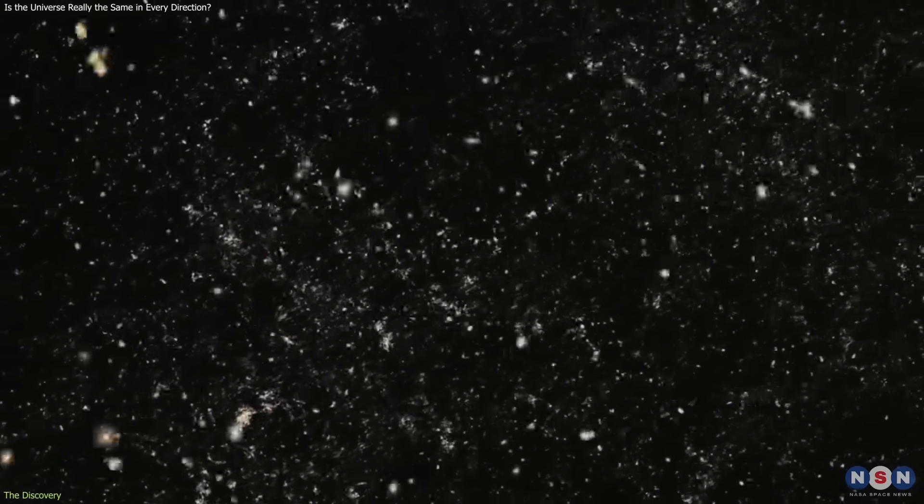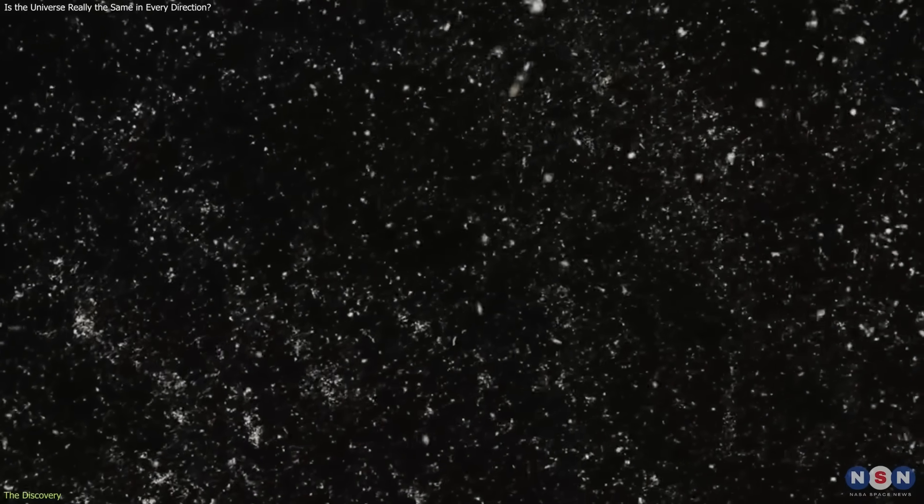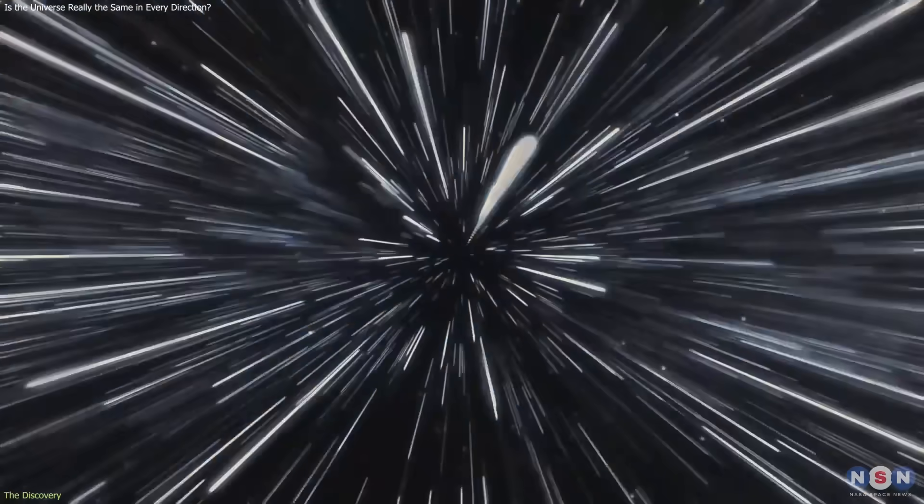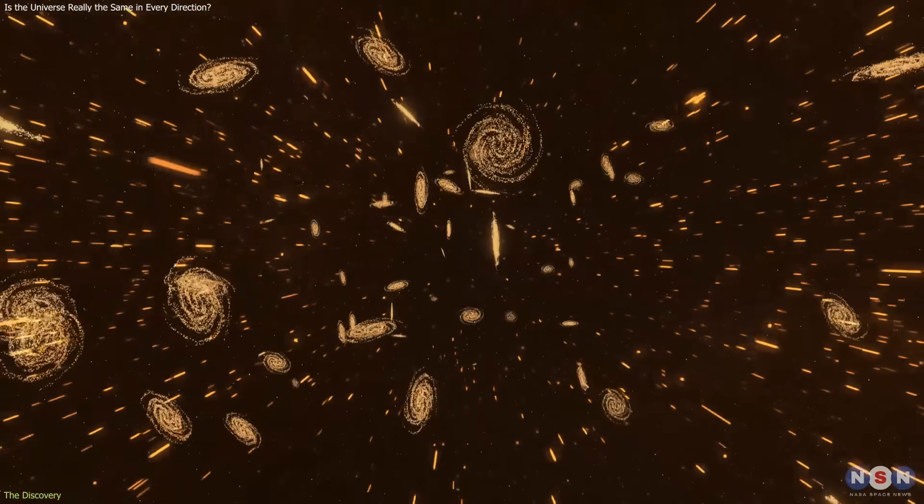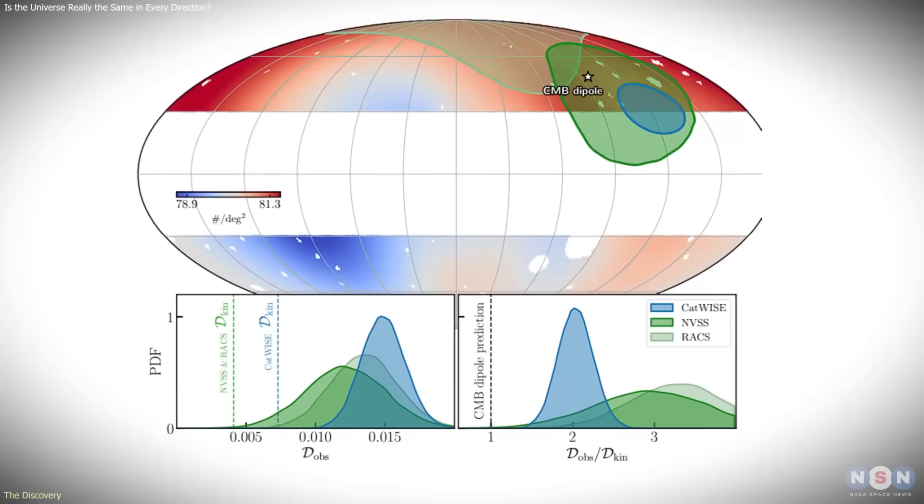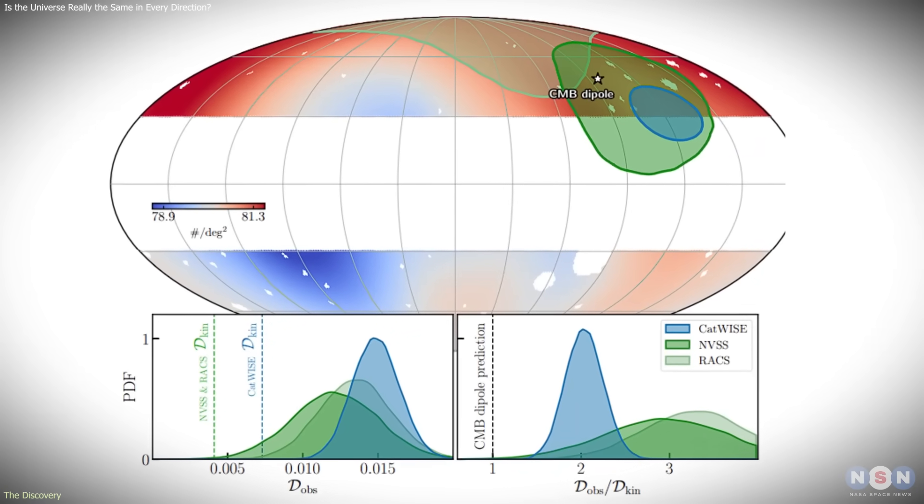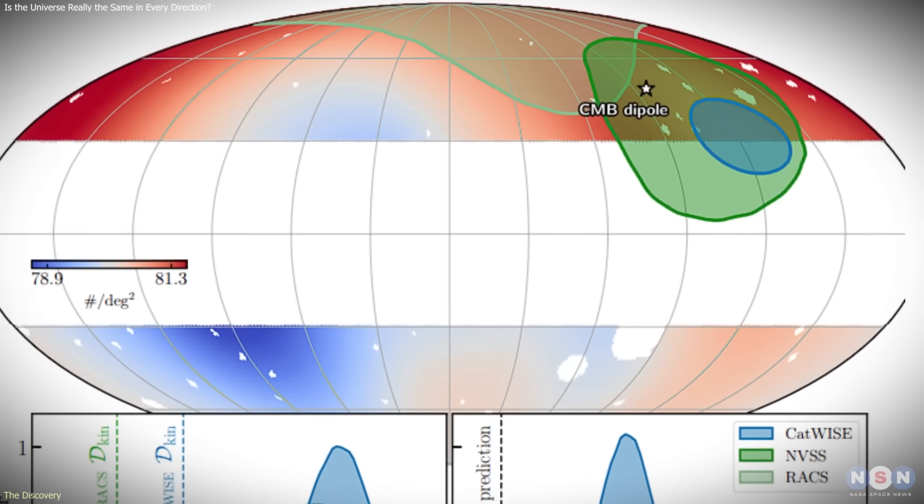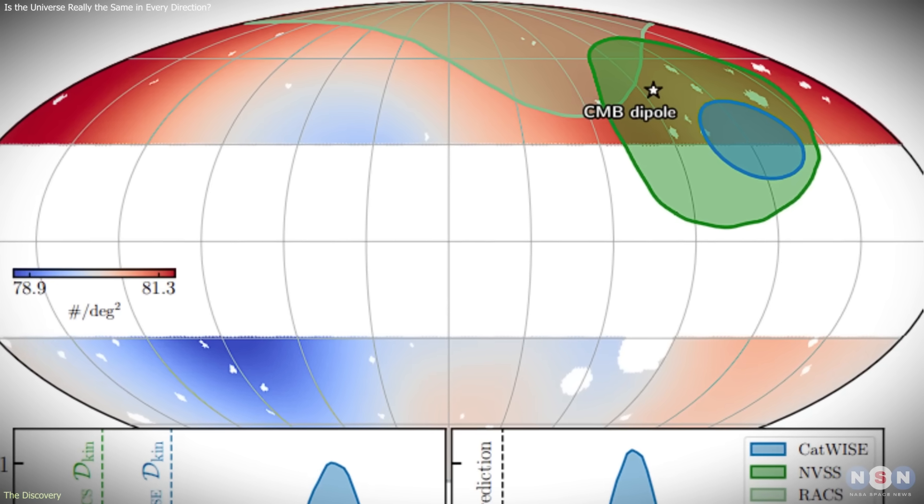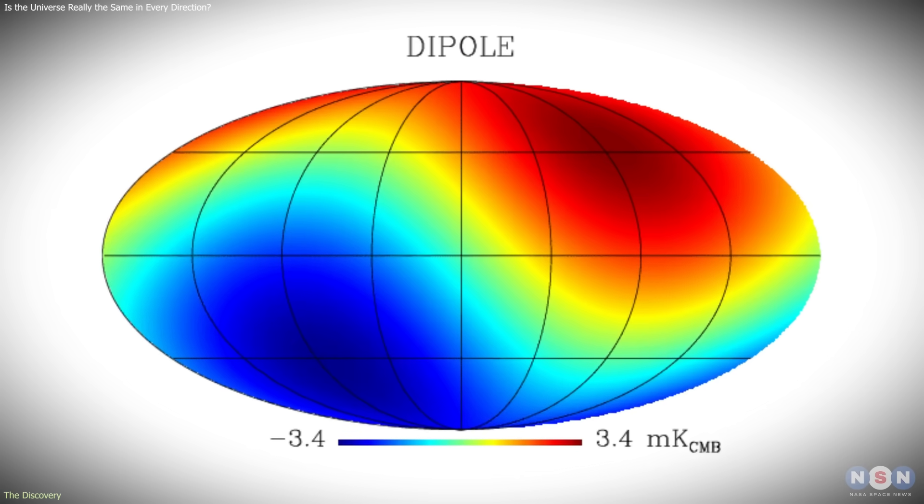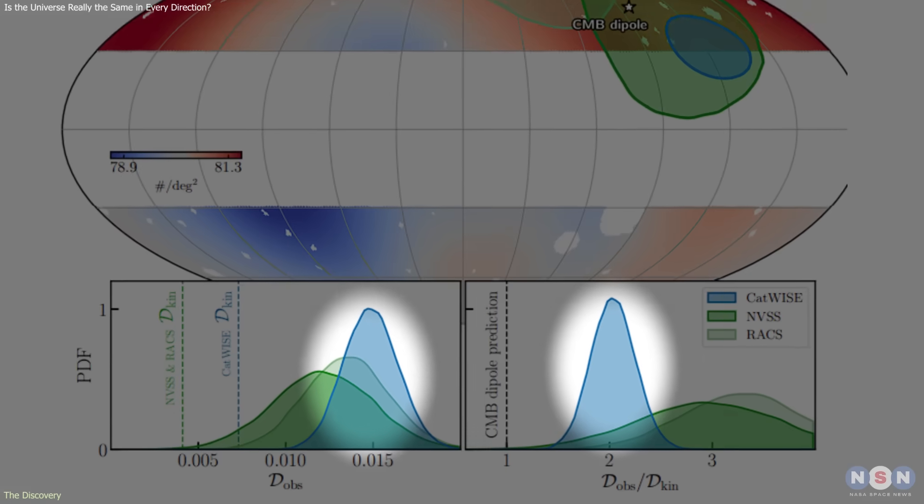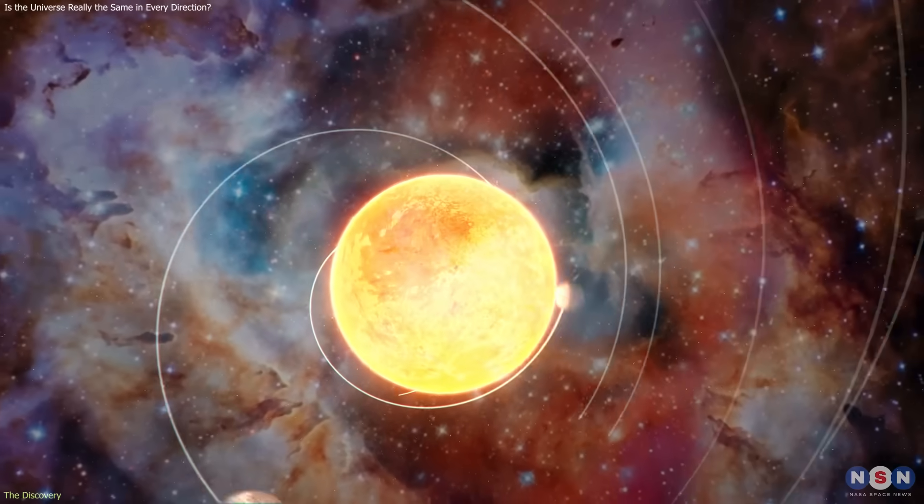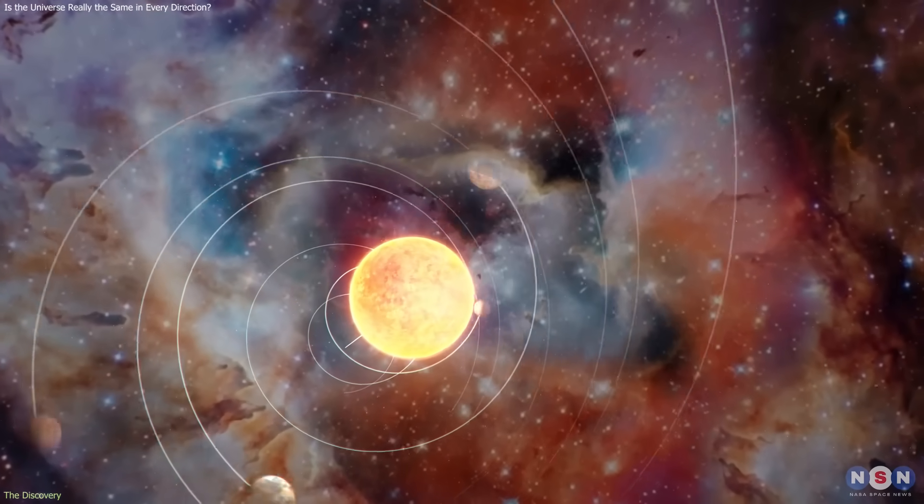Modern surveys include millions of distant radio galaxies, quasars, and infrared sources, selected at distances where local structures cannot dominate the signal. When researchers analyzed these data sets, the results were unexpected. The direction of the matter dipole aligns closely with the direction of the CMB dipole, suggesting the effect is not random. But the amplitude of the matter dipole is significantly larger than predicted if it were caused solely by our motion through the universe.